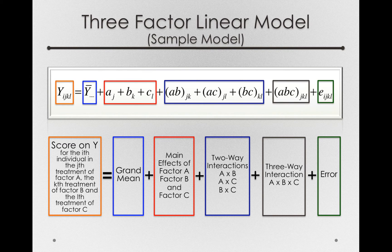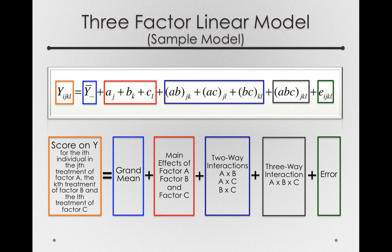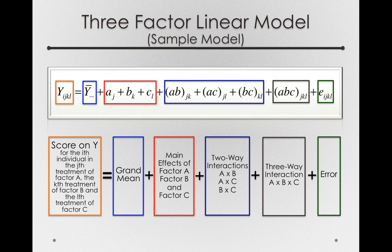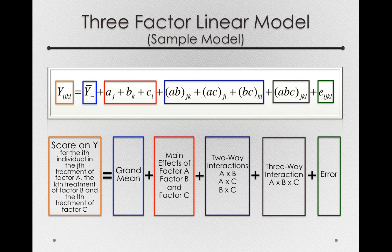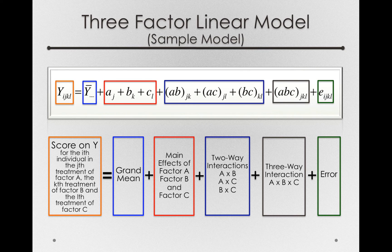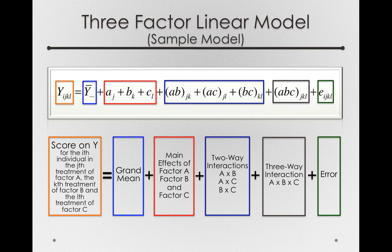And finally, to finish off our model, we have the error, so the residual e_ijkl, the degree to which an individual in any of these combinations differ from their own condition mean. So this is our three-factor linear model. Notice it has a similar structure to all of our linear models. We just have a proliferation of different sources now we need to test.